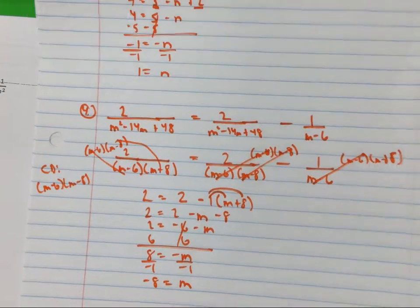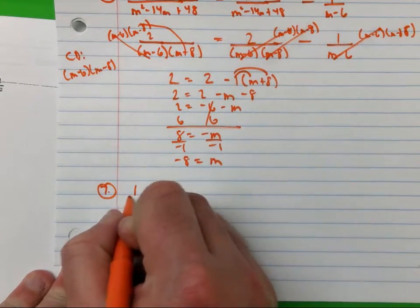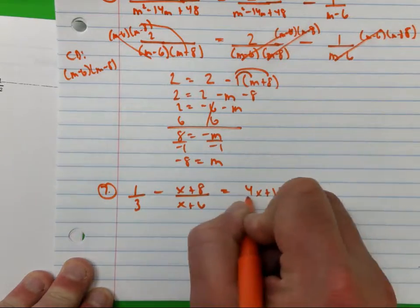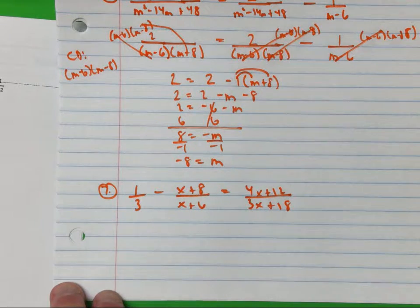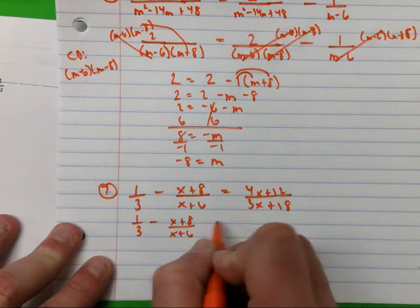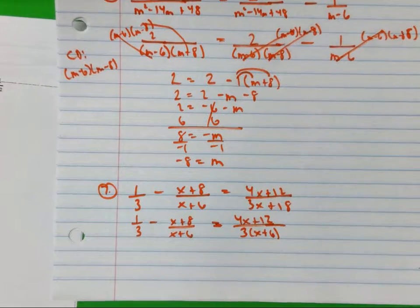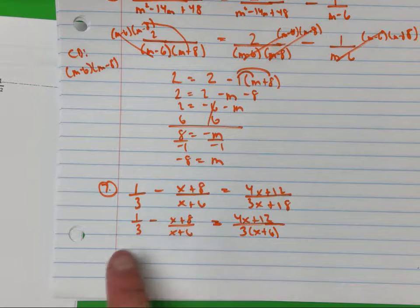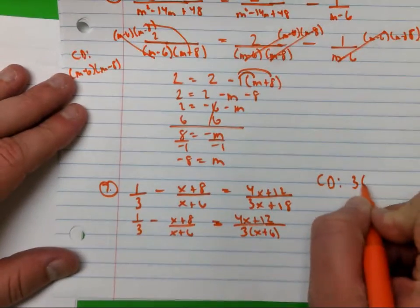I'm going to look at one more — number seven. We have: one third minus x plus eight over x plus six equals four x plus 12 over three x plus 18. The first thing I'm going to do is factor my denominators. The only one I can factor is three x plus 18, giving three times x plus six. I'm mainly worried about the denominator to find my common denominator. I have a three, an x plus six, and a three and x plus six on the right. I can't make one become the other, so I settle for both — my CD is three times x plus six.